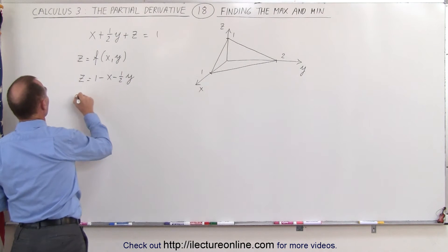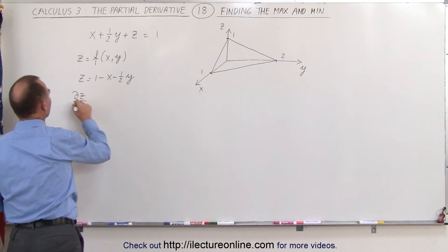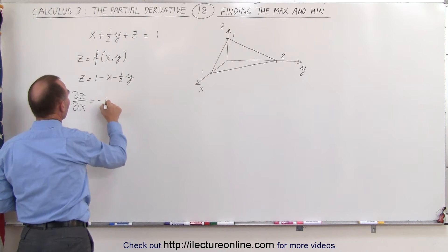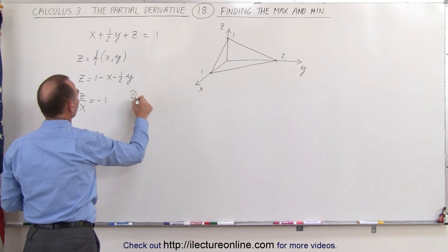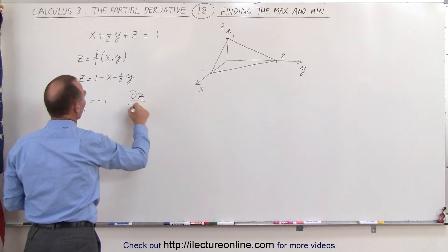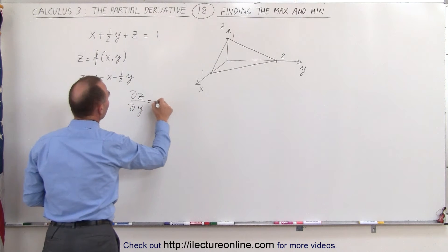The partial of z with respect to x is equal to, in this case that would be a minus 1. The partial of z with respect to y is equal to a minus one-half.